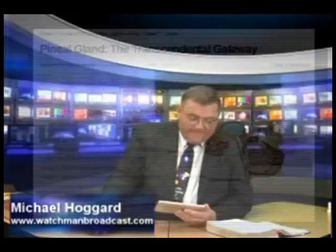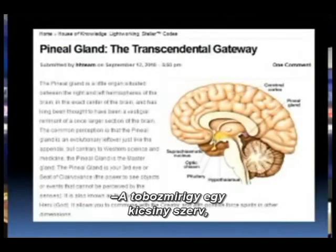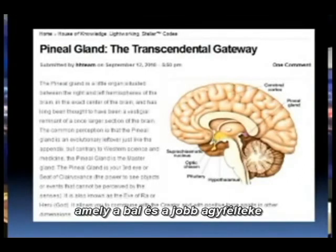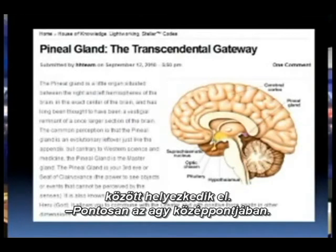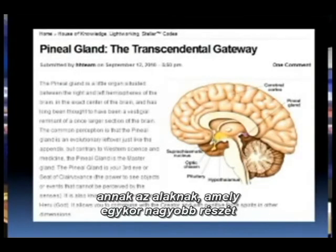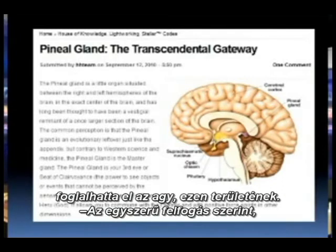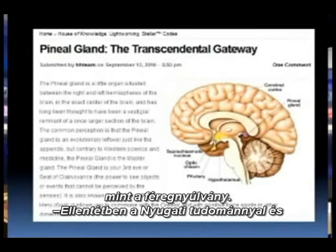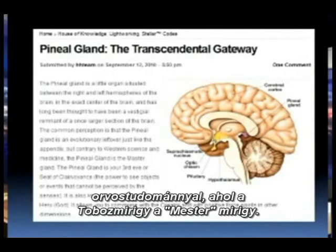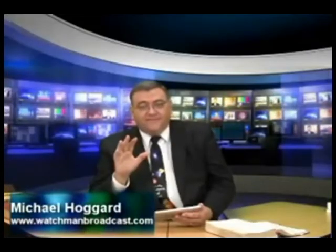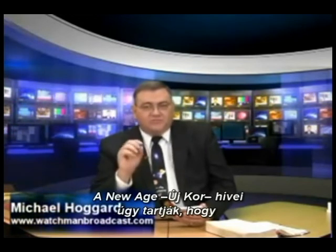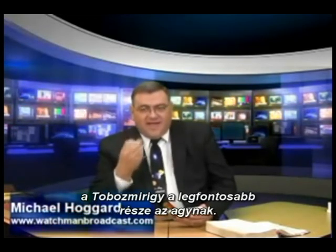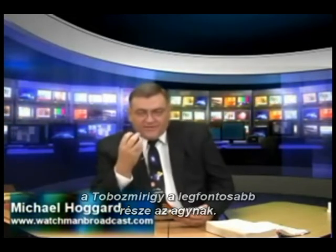Here we go. The pineal gland is a little organ situated between the right and left hemispheres of the brain — in other words, it's like the center point, the fusion point of your brain, in the exact center of the brain. It has long been thought to have been a vestigial remnant of a once larger section of the brain. The common perception is that the pineal gland is an evolutionary leftover, just like the appendix. But contrary to Western science and medicine, the pineal gland is the master gland. You catching this? It's the master gland.